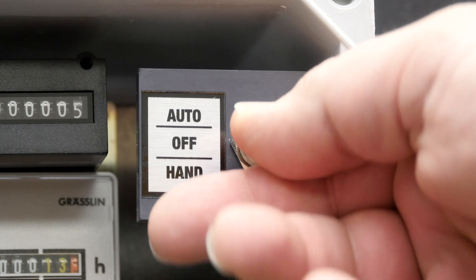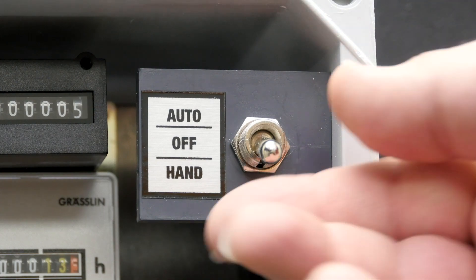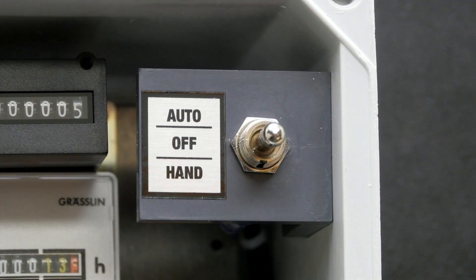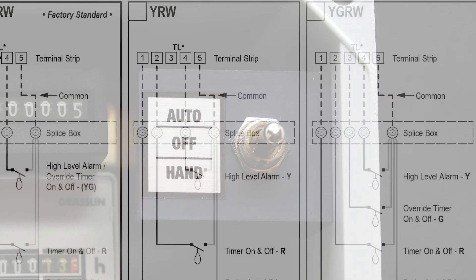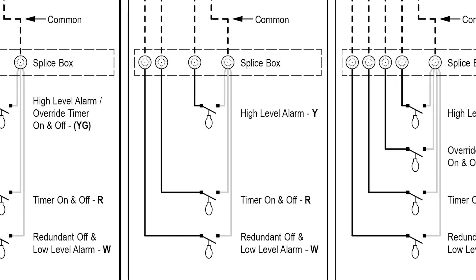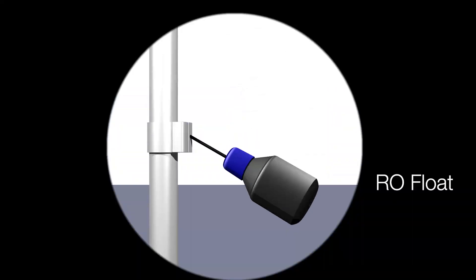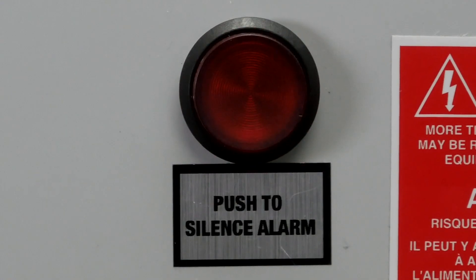The last position, manual, bypasses normal panel operation and immediately supplies power to the pump. The pump will continue to operate until the switch is moved to the off position, or the redundant off float, if applicable, drops and sounds the alarm.